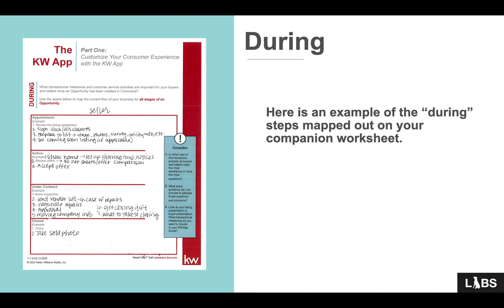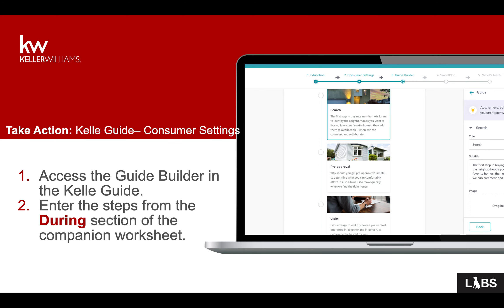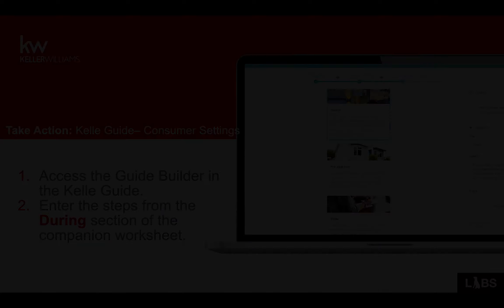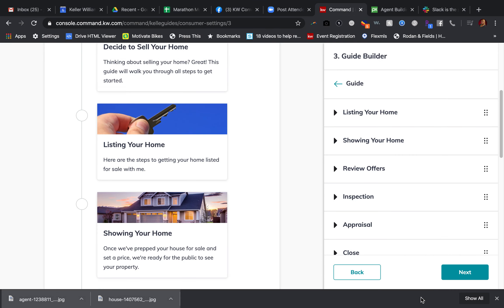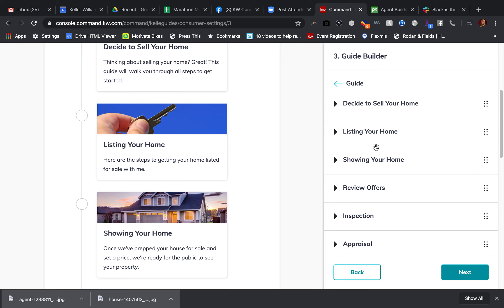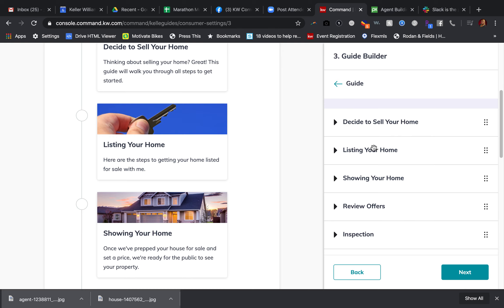Those are everything that I thought of that would be happening during the transaction — and I very well could have missed some things. So just know that this is the during portion. Now we're going to jump back over to the Guide Builder and work through from 'Showing Your Home' all the way to closed. We're going to go back into Command — remember we just did 'Deciding to Sell Your Home' and 'Listing Your Home,' those two, and we're starting with the process of 'Showing Your Home.'